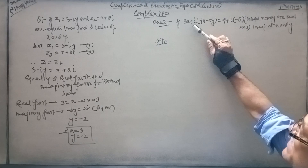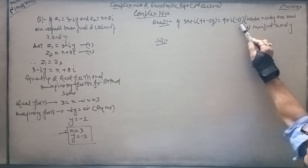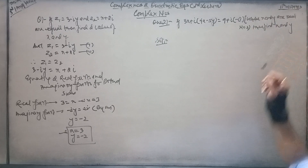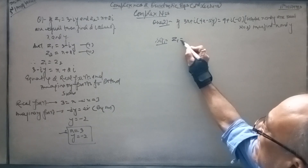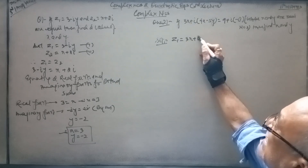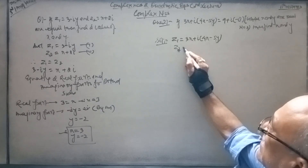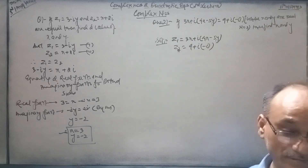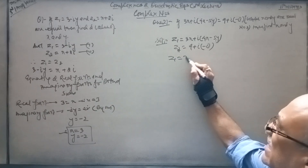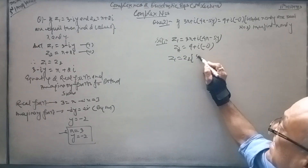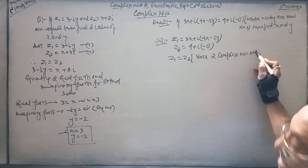Next question: 3x plus i times (4x minus 5y) equals 9 plus i times (minus 8), where x and y are real numbers — find x and y. Let z1 equals 3x plus i(4x minus 5y) and z2 equals 9 plus i(minus 8). Since z1 equals z2, equate real and imaginary parts from both sides.